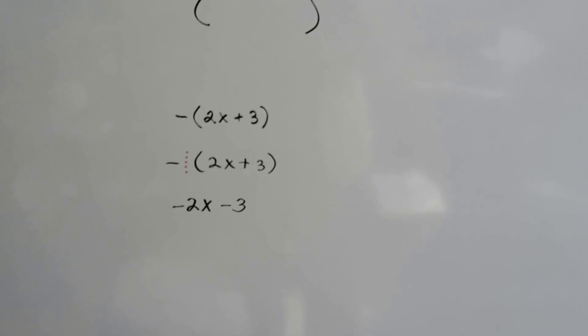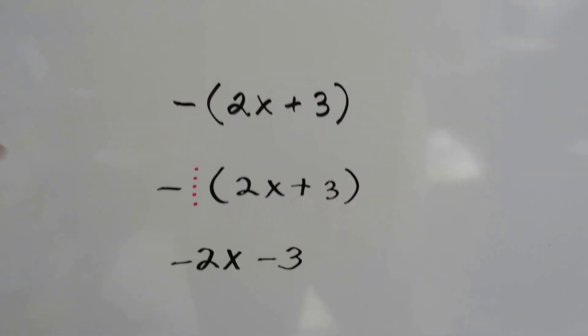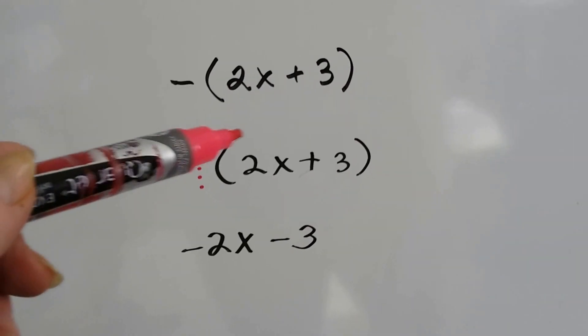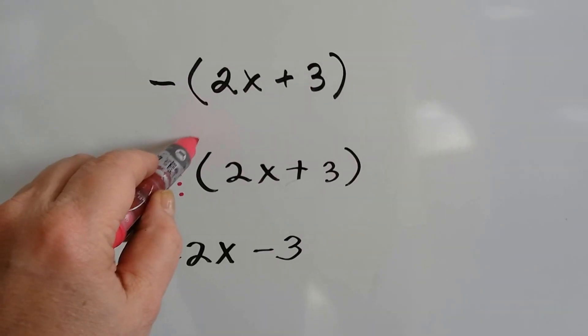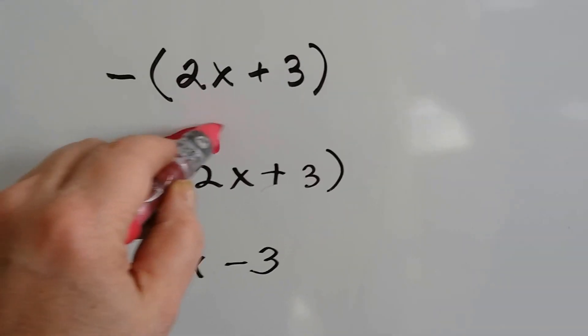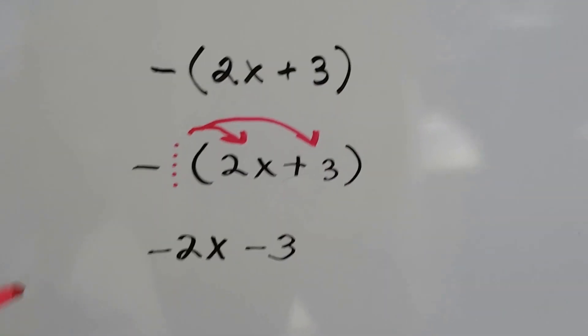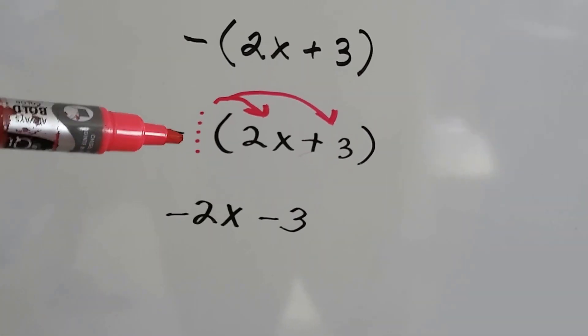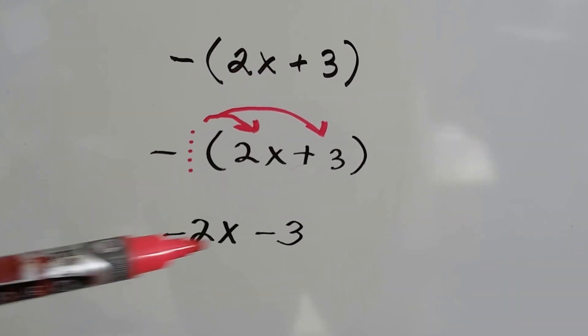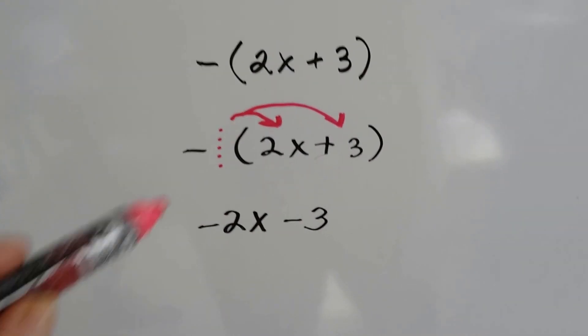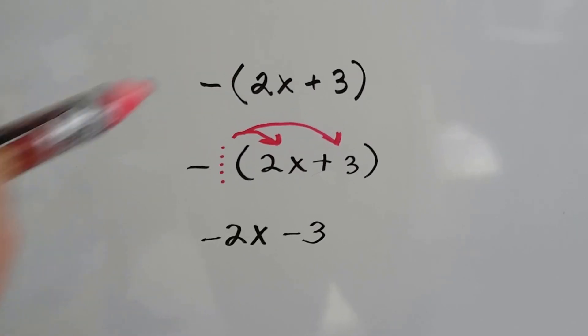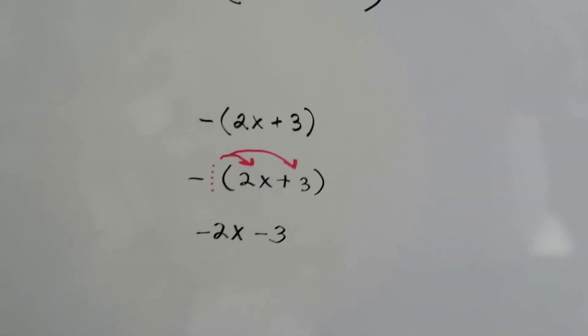The other thing I want you to remember is if you just see a minus sign in front of the parentheses, there's really a 1 there. So we could distribute a negative 1 to each of the terms inside of the parentheses. So we'd have negative 1 times 2x, which would give us a negative 2x, and negative 1 times a positive 3, which gives us a negative 3. Don't forget there's a little invisible 1 there when you see it just right up next to the parentheses.